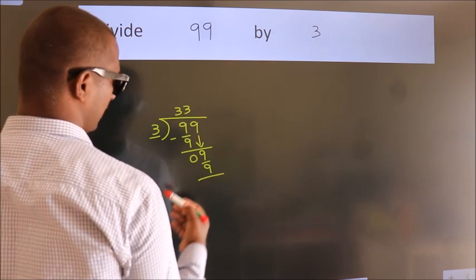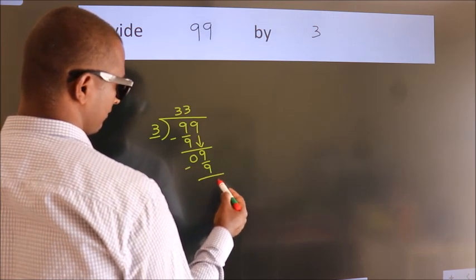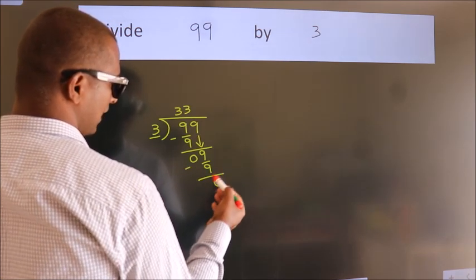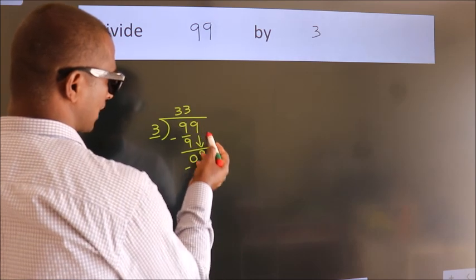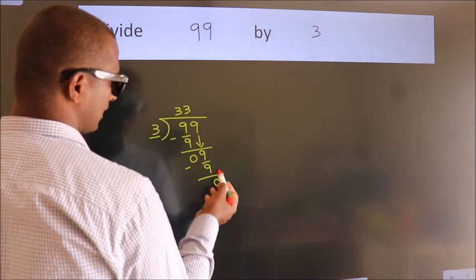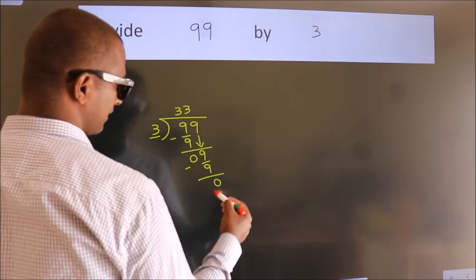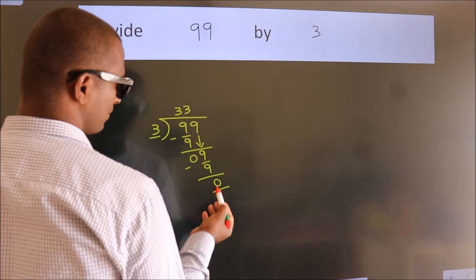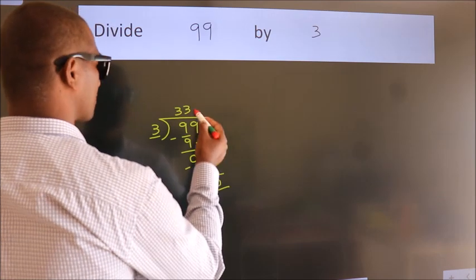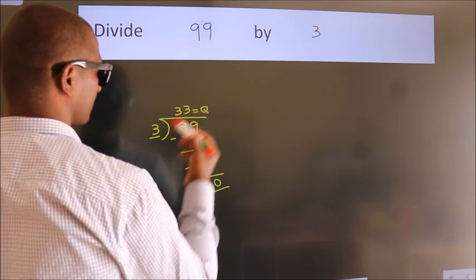Now we subtract and we get 0. After this, no more numbers to bring down, and we got remainder 0. So this is our quotient.